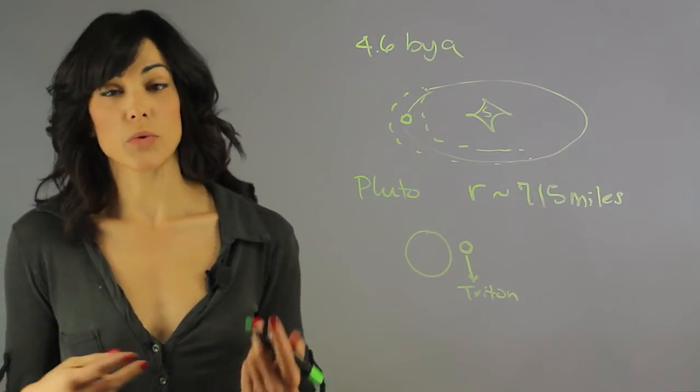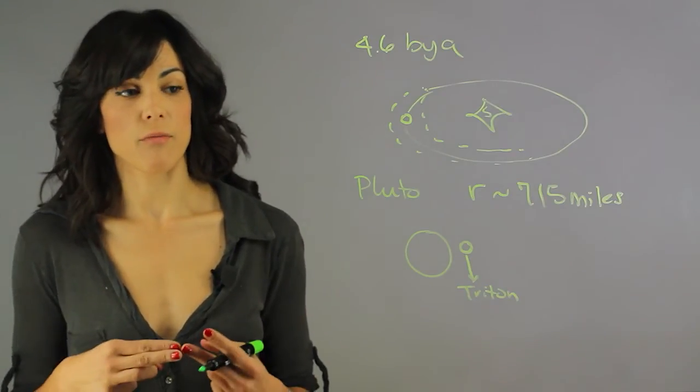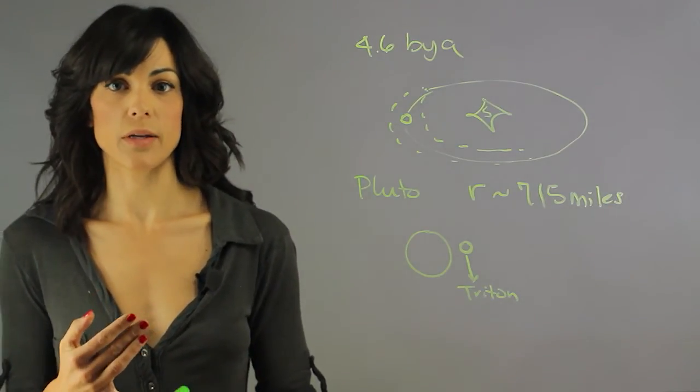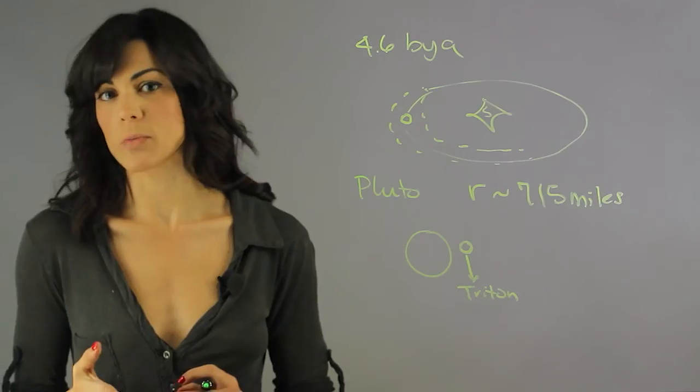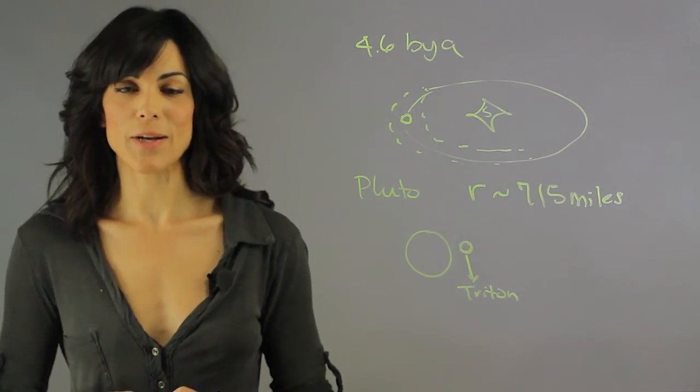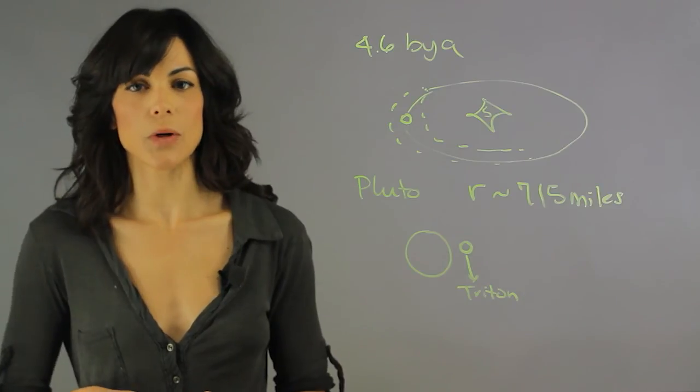So there are two reasons that Pluto may have always been this small: one, it may have failed to accrete enough mass, or two, it may have just been a moon that was kicked out of orbit. My name is Aileen Perez, I'm an astrophysicist, and this is Was Pluto Always That Small?